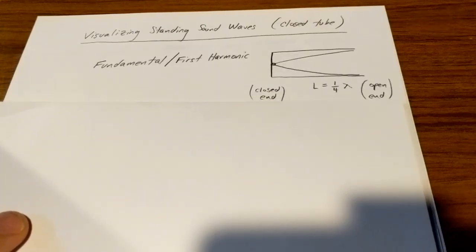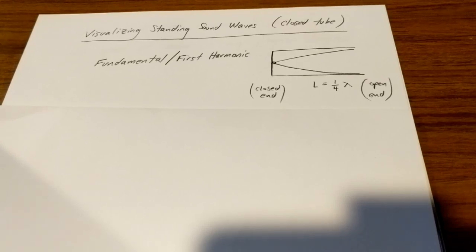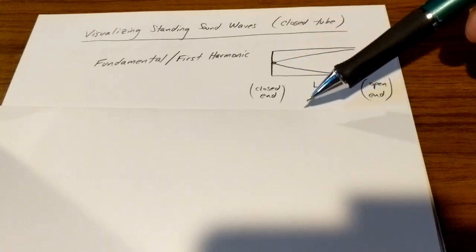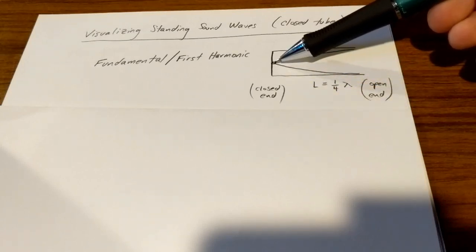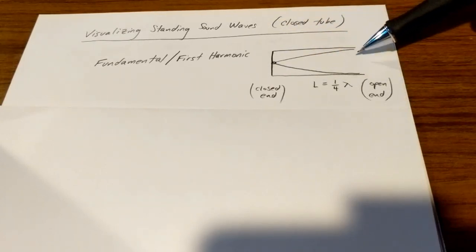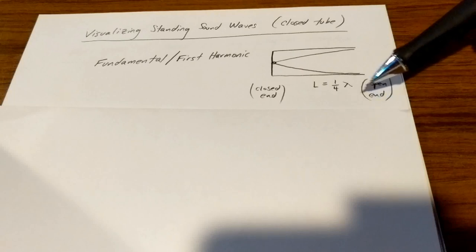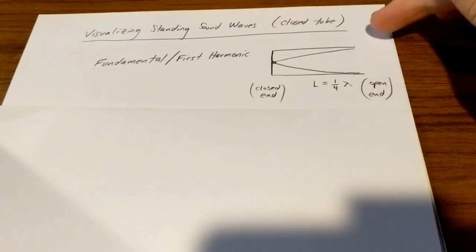Before we see closed-tube resonance in action, let's try and picture exactly what's going on for the air molecules inside of the closed-tube. We're again going to do this for visualization's sake with a transverse wave even though we know that sound waves are compression waves. In this case, for the fundamental or the first harmonic, we have a stationary or a node at the closed-end of the tube. So this particle, this air molecule, does not move from this position at all even when the standing sound wave is set up in the tube. And then the most violent oscillation occurs at the open-end. So here's the closed-end and the open-end, and this occurs first when the length of the tube is a quarter of the wavelength of the sound that is being produced.